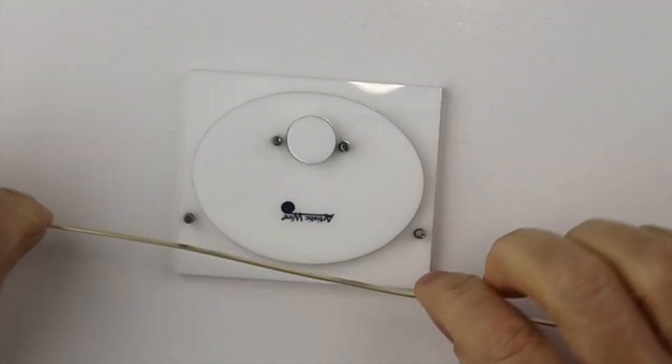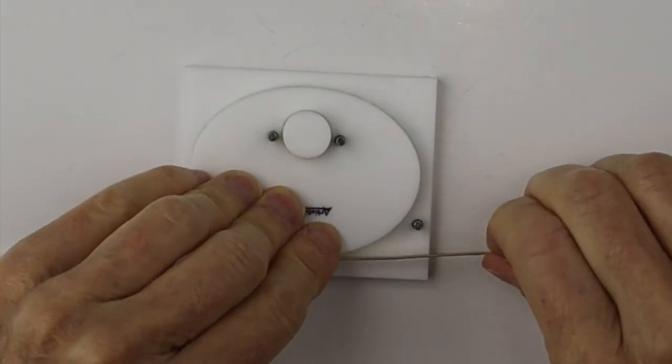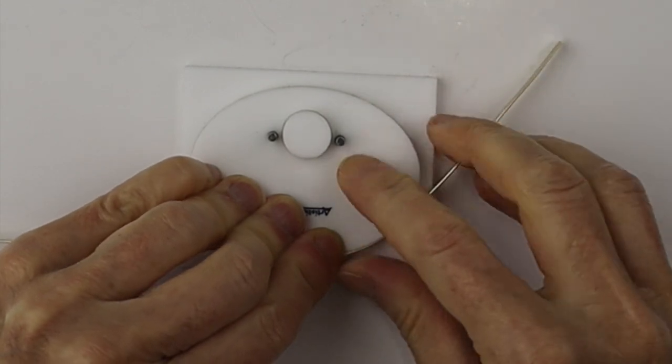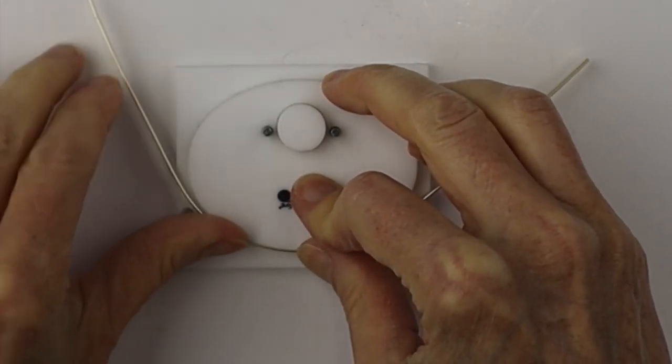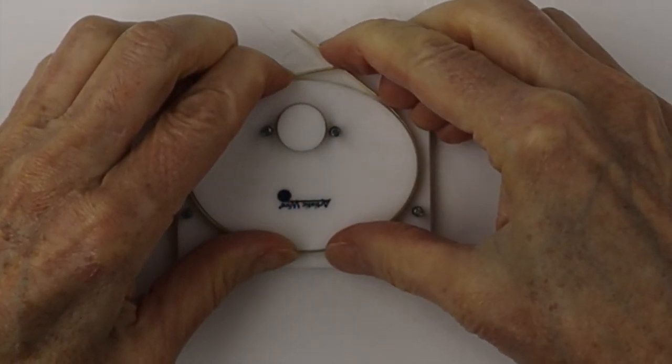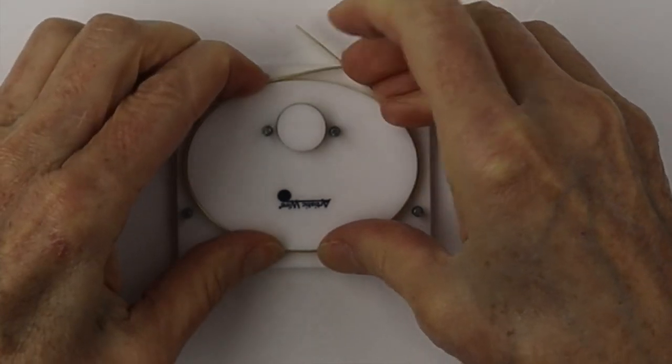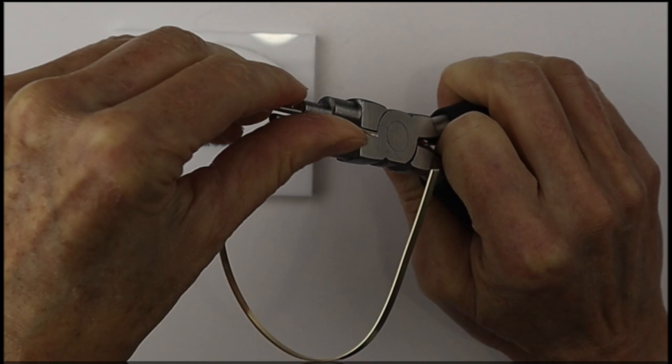Then I'm going to wind it around the bracelet mandrel. I will link up all my materials and tools in the description below the video. We're going to wind it around the mandrel. If you don't have a mandrel, you can wind it around a round form. Then we're going to remove it.